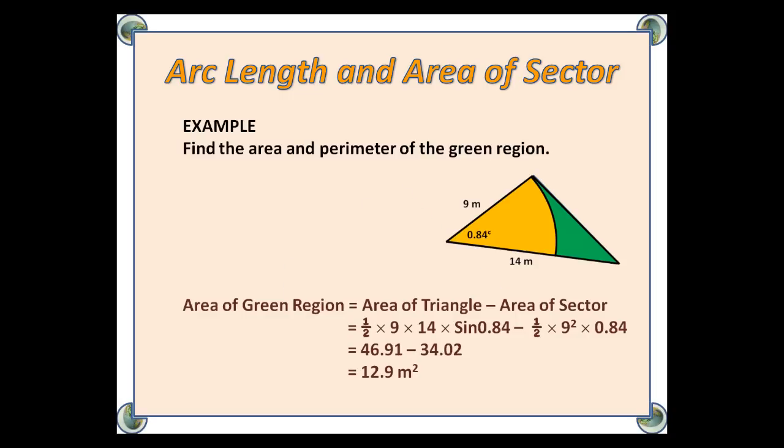Firstly, we look at the area. The area of the green region is the area of the triangle minus the area of the sector. Using half AB sine C, we have half times 9 times 14 times sine 0.84, which is 46.91. And for the area of the sector, we have a half of 9 squared times 0.84, which is 34.02. The difference is 12.9 metres squared.